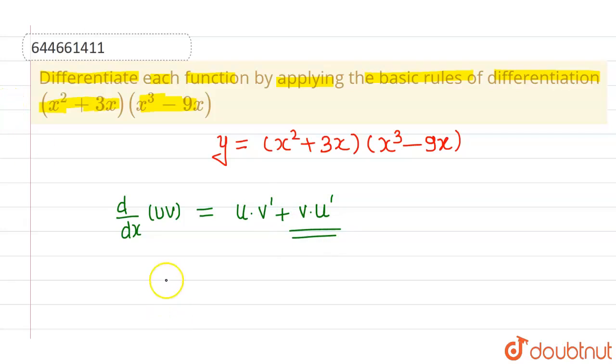I can say that dy over dx will be equals to x square plus 3x as it is, into differentiation of x cube minus 9x which is nothing but 3x square minus 9. Okay, plus v as it is which is nothing but x cube minus 9x into differentiation of x square plus 3x which is nothing but 2x plus 3. So this is 2x plus 3.